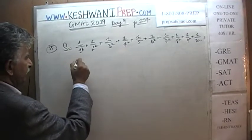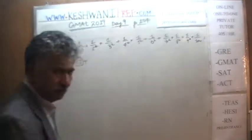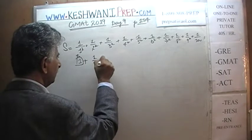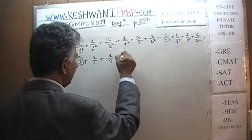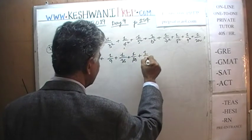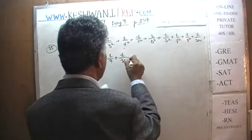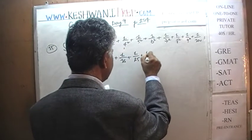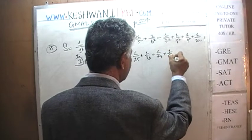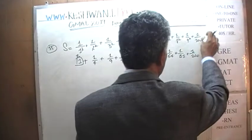1 over 1 squared is just 1 — think of this as a dollar. Now think of the remaining terms as cents. 1 over 2² is 1/4, 1 over 3² is 1/9, then 1/16, 1/25, 1/36, 1/49, 1/64, 1/81, and 1/100, because that was 1 over 10 squared.